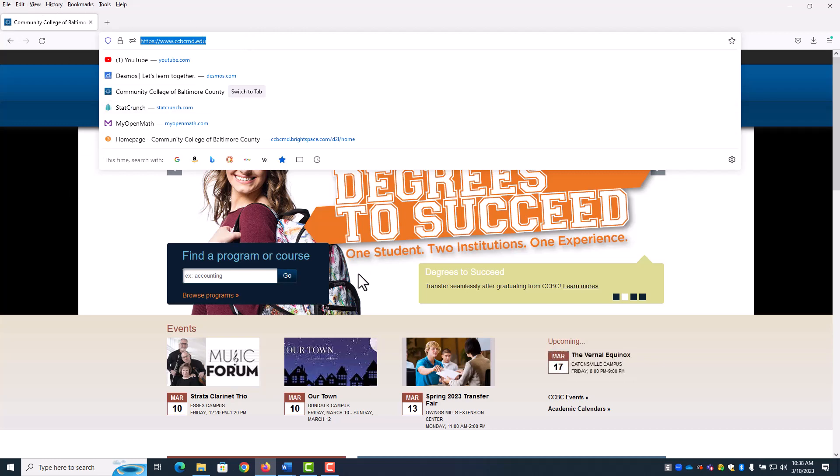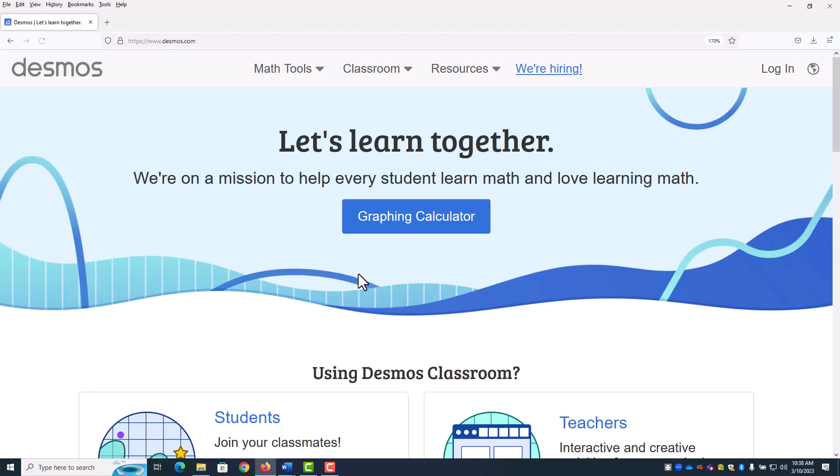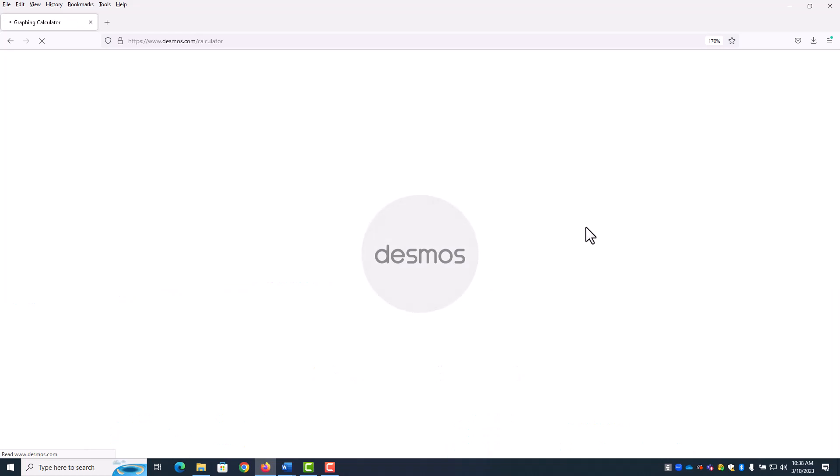From any web browser, we're going to type in desmos.com. That should take you to this page and then we're going to click on graphing calculator.